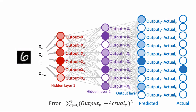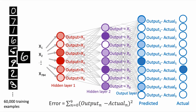We then have to repeat this for all our training data, so that for all pieces of training data, we repeat this error calculation by summing the squared error over all our output neurons, for the difference between what we want our network's output to be and what the actual output currently is. Averaging this error over all training data gives us the value for the cost function for the current values of weights and biases in our network.